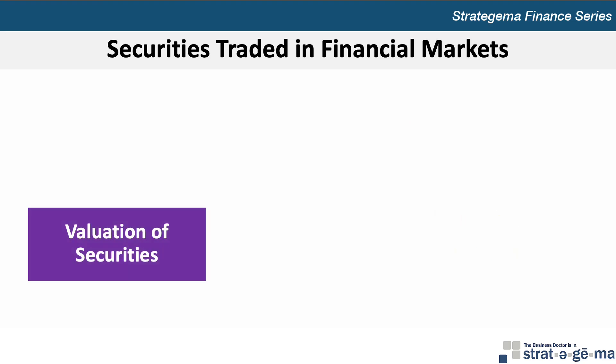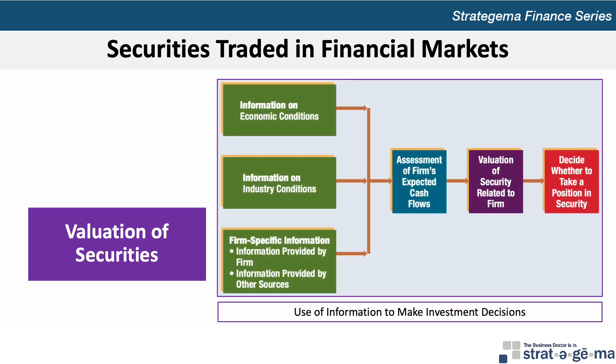Each type of security generates a unique stream of expected cash flows to investors, and their value is often measured as the present value of those expected cash flows, discounted at a rate that reflects the uncertainty surrounding the cash flows. Investors can attempt to estimate the future cash flows they will receive by obtaining information that may influence a security's future cash flows using the process described in this diagram, where investors will gather information on economic conditions, industry conditions, and the firm itself in order to assess the firm's expected cash flows, which are then used to value the security to help the investor decide whether or not to take a position in the security.